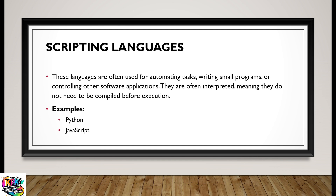Scripting languages are often useful for automating tasks. They help us write small programs or control other software applications. They are often interpreted languages, meaning they do not need to be compiled before execution. Examples of scripting languages are Python and JavaScript.